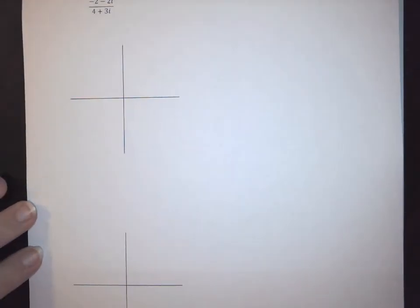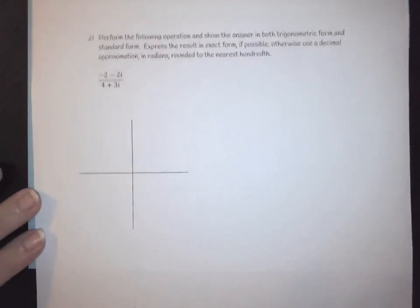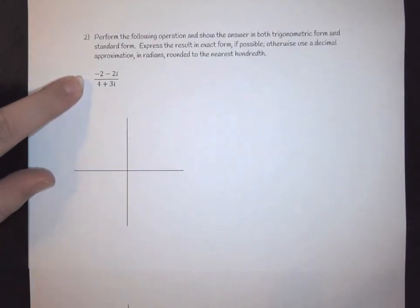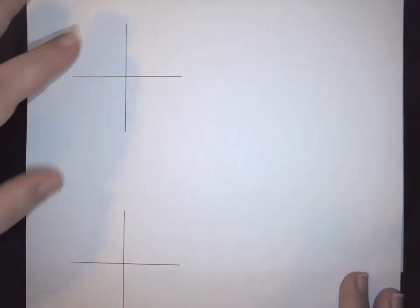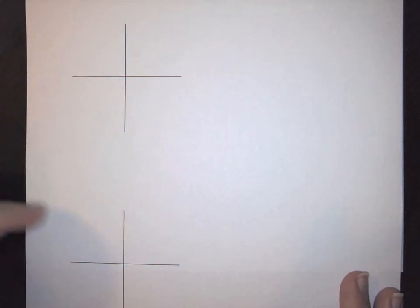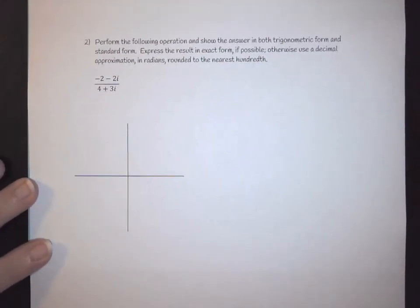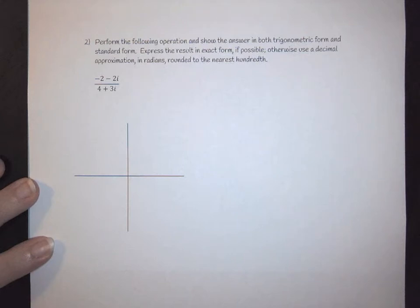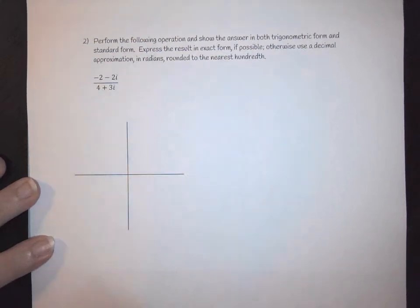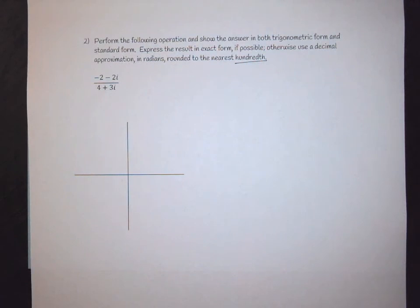Let's look at one more example so you can see how this works. In this case we are doing an operation — we're going to use division. Just like with others, we're going to have a triangle for each part of our division. The problem says to perform the operation and show the answer in both trigonometric form and standard form. Express the result in exact form if possible, otherwise use decimal approximation in radians and round to the nearest hundredth.